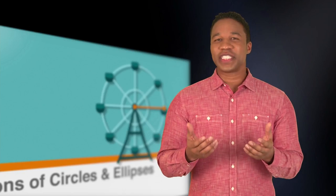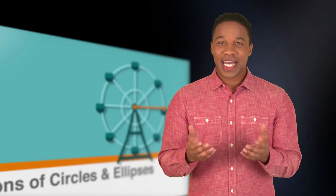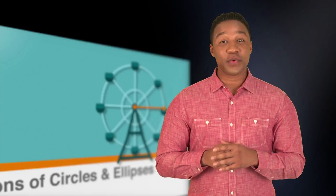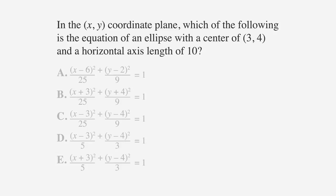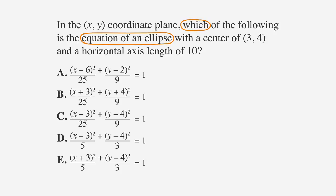Now that we know the geometry of a football more intimately, let's apply our newfound knowledge to an ACT problem. In the x-y coordinate plane, which of the following is the equation of an ellipse with a center of 3,4 and a horizontal axis length of 10? First let's circle the keywords, underline the facts, and label the answer choices.